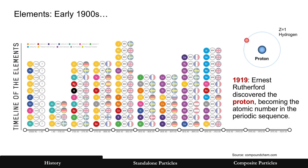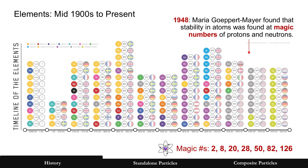In the early 1900s, Ernest Rutherford finally discovered the proton, which was the key element. That atomic number in the sequence discovered earlier is based on the proton. This is the table completely filled out to the present, with all the different elements.